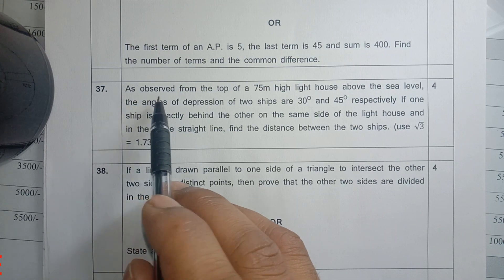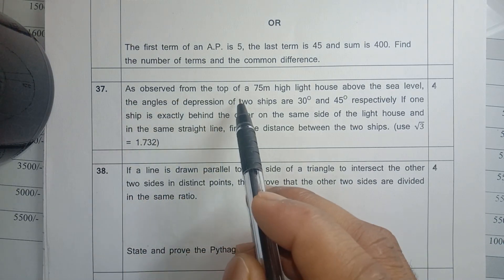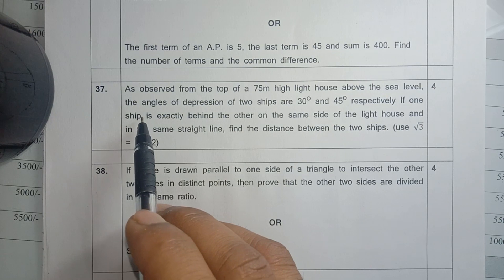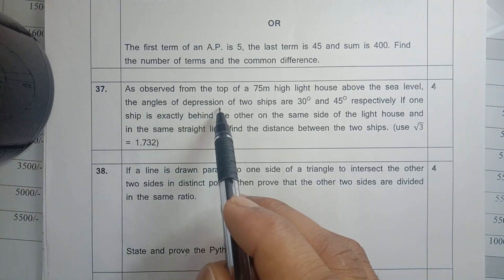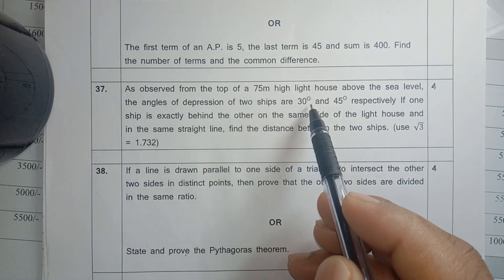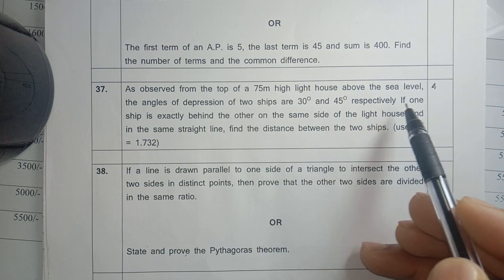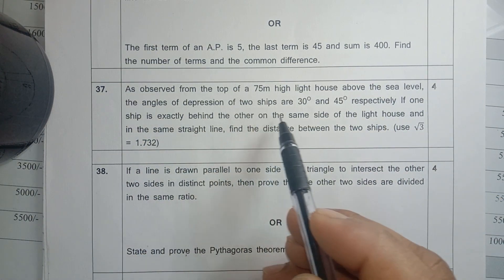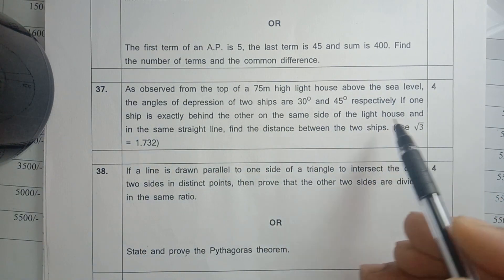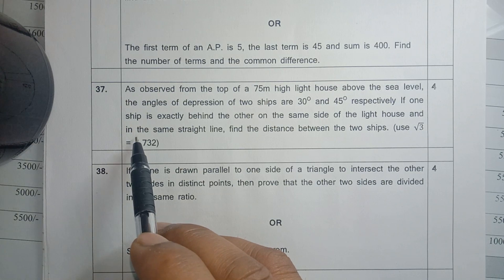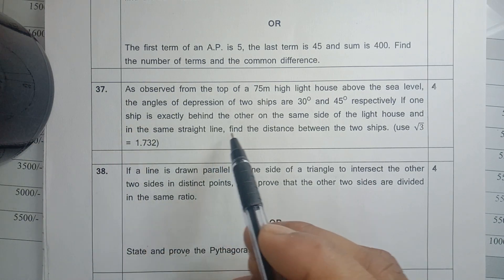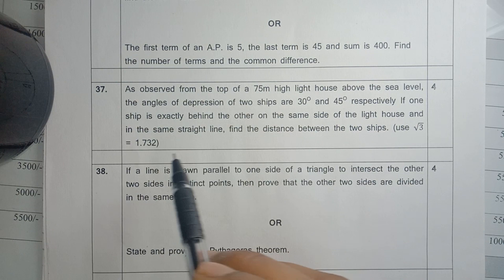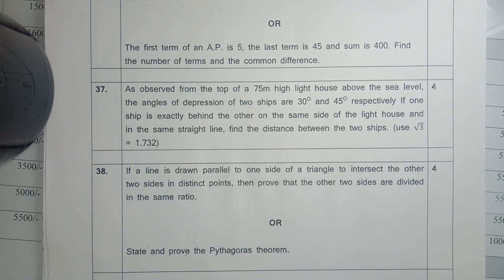What are we going to do here? As observed from the top of a 75 meter high lighthouse above the sea level, the angles of depression of two ships are 30 degree and 45 degree respectively. If one ship is exactly behind the other on the same side of the lighthouse and in the same straight line, find the distance between the two ships. Use root 3 = 1.732.